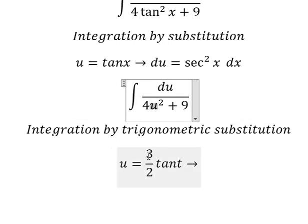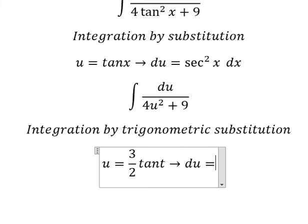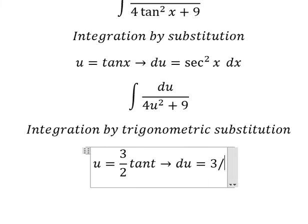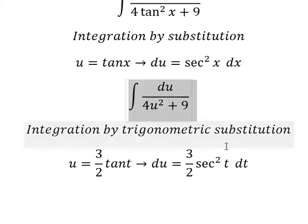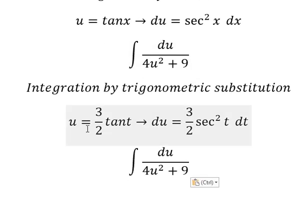Number four, number four we cancel. Number nine, number nine we can do factorization. The plus one we change by secant of t squared. And later we simplify by du. So du here is three over two secant of t squared dt.